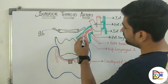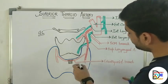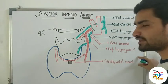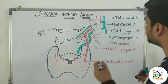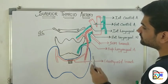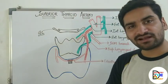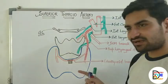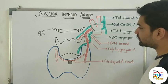Now, apart from the main superior thyroid artery, it gives three branches. The three branches of the superior thyroid artery are: first, the sternocleidomastoid branch; second, the superior laryngeal artery; and third, the cricothyroid branch. The sternocleidomastoid branch is simple — it supplies the sternocleidomastoid muscle. The superior laryngeal artery runs along the internal laryngeal nerve, whereas the main superior thyroid artery runs with the external laryngeal nerve.